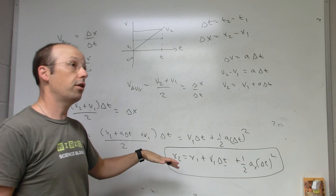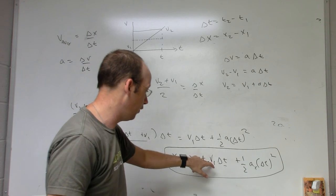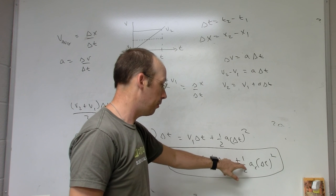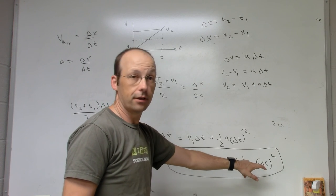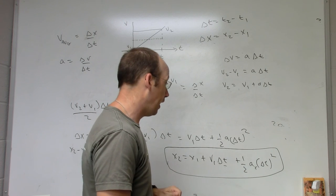If you wanted to do this in the y direction, it would still work. With y2 equals y1 plus v1y delta t plus 1 half ay delta t squared. As long as a is constant. Okay, a has to be constant.